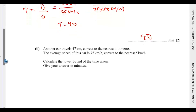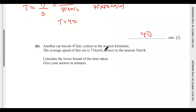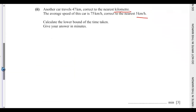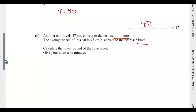Part (ii): another car travels 47 kilometers, correct to the nearest kilometer. The average speed of this car is 75 kilometers per hour, correct to the nearest five kilometers per hour. You have to watch out for the degree of accuracy. Calculate the lower bound of the time taken, give your answer in minutes — that is worth three marks. We want to find the lower bound of the time.